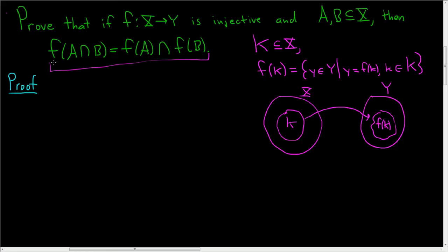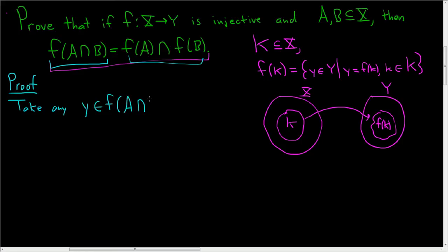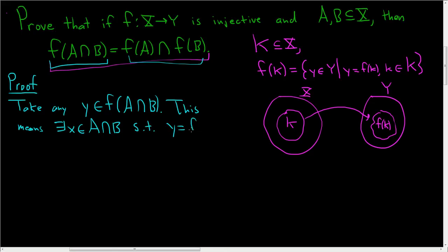To prove this equality, we'll take an element in this set here and then show it's in this set, and vice versa — so we'll show that these two sets are subsets of each other. Take any Y in F of A intersection B. This means there exists an element which we'll call X in the intersection A intersection B, such that Y is equal to F of X.